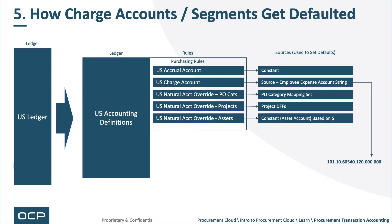This is one of the very unique things about Fusion — it gives tremendous value and consistency because you can call the same rules across GL, across AP, and the accounting hub for inbound transactions. Lastly, you can define different sources: a mapping account source, a hard-coded source, and many others. You ultimately end up with the expense account, or rather Charge Account — in this example 101-10-6054 — which is how the different segments within the Charge Account get set.